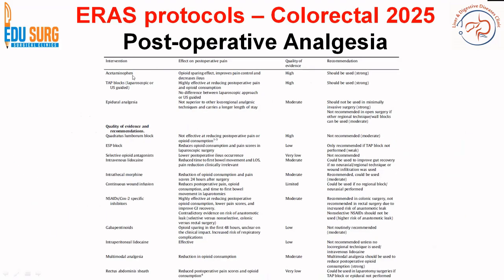Post-operative analgesia: we start with acetaminophen, TAP blocks, and epidural analgesia — these are the three agents routinely used. Quadratus lumborum block is not routinely used, and selective opioid antagonists are also not routinely preferred. NSAIDs and COX-2 specific inhibitors are used but in limited quantity. The first line of analgesia is paracetamol. Epidural is routinely used in colorectal surgeries; if epidural is not performed due to delayed INR or spinal deformities, TAP blocks are also very helpful.